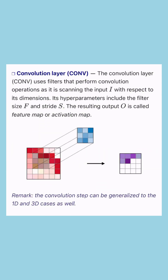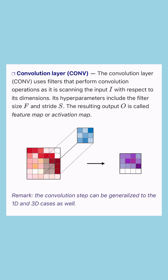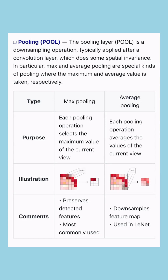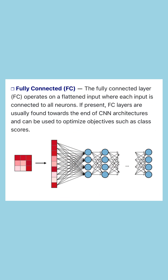The architecture is actually pretty elegant. You have convolutional layers that slide filters across your image looking for things like edges and textures. Then pooling layers, which downsample by taking either the maximum or average value from each region, giving you spatial invariance while shrinking the data. Finally, fully connected layers flatten everything and connect each input to all neurons to make the final decision.